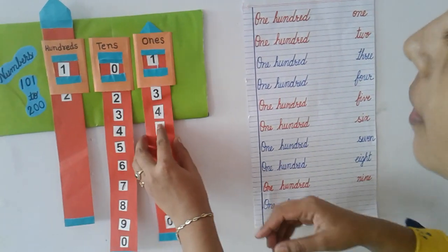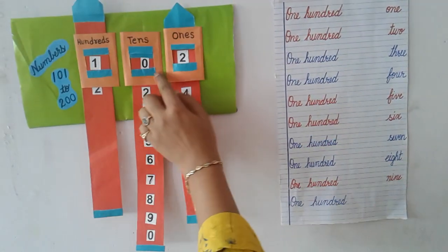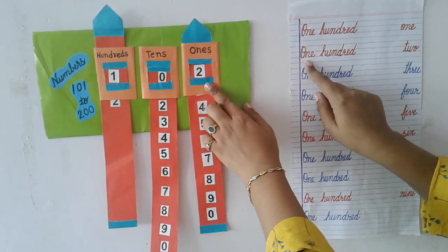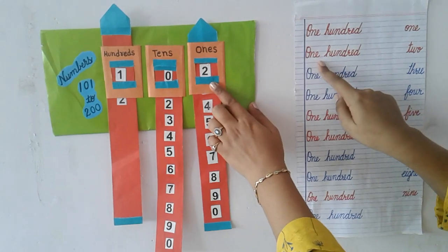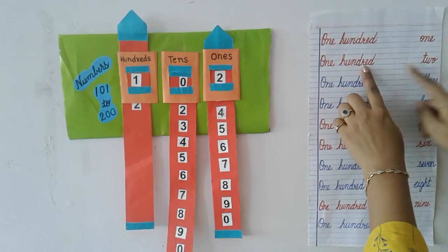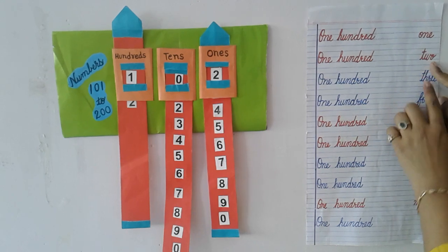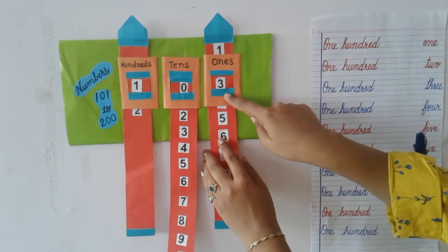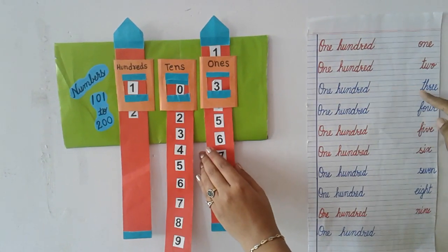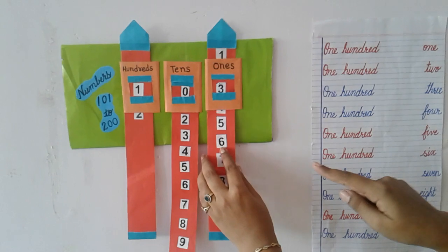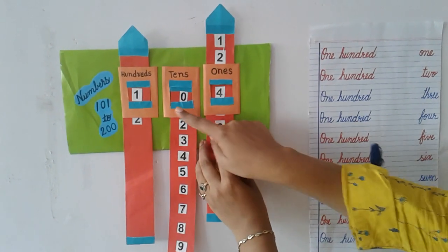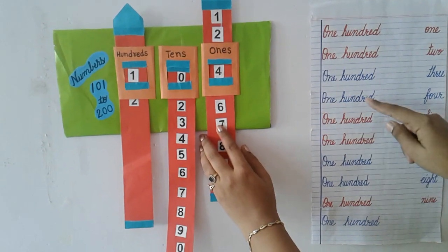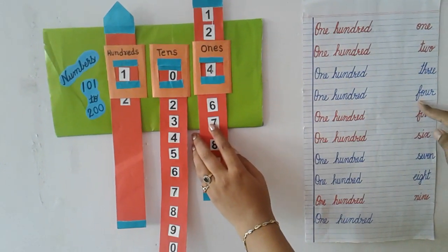Now let's see 102. Here is the spelling of 102: ONE HUNDRED TWO. Now spelling of 103: ONE HUNDRED THREE. Now spelling of 104: ONE HUNDRED FOUR.